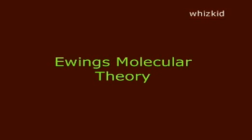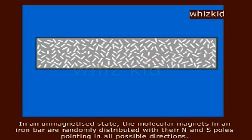Ewing's Molecular Theory: In an unmagnetized state, the molecular magnets in an iron bar are randomly distributed, with their north and south poles pointing in all possible directions.